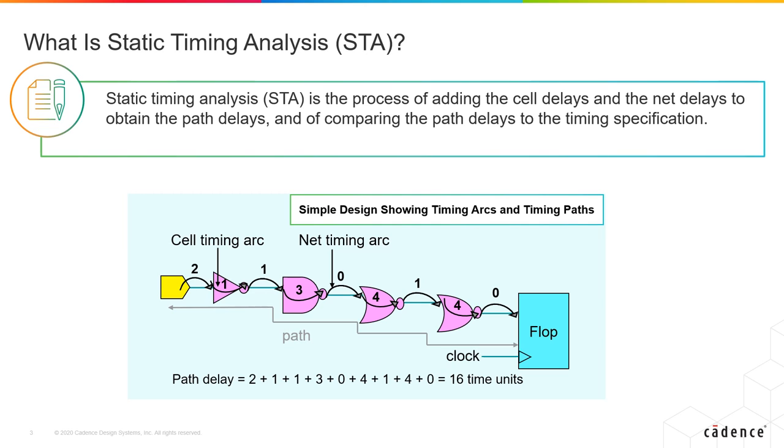So in static timing analysis, we look at the circuit devoid of any time frames and simply just add the cell delays and the net delays from the libraries or elsewhere, come up with the path delays, and then compare these path delays to a timing specification as given by your constraints.